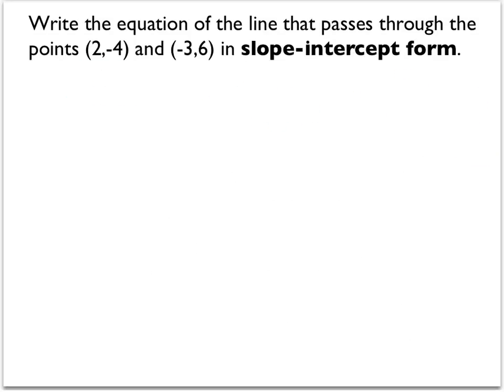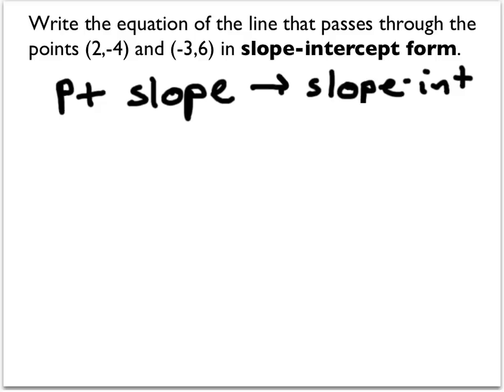Next, we want the same line, but we want that line in slope-intercept form. So we'll use point-slope form to get to slope-intercept. So we'll want to take our point-slope form and, using algebra, isolate the y and have the right side equal to mx plus b.